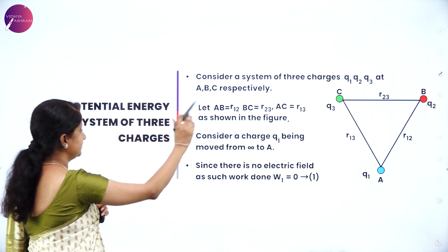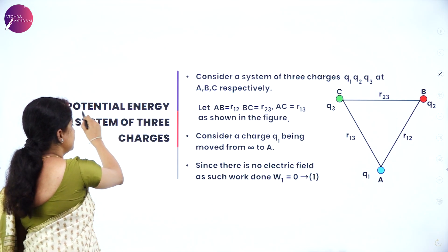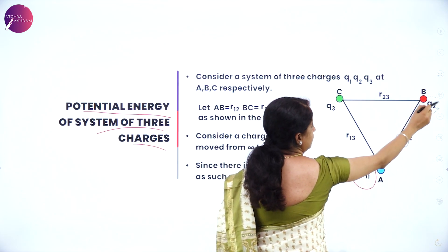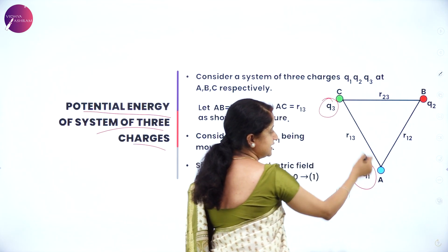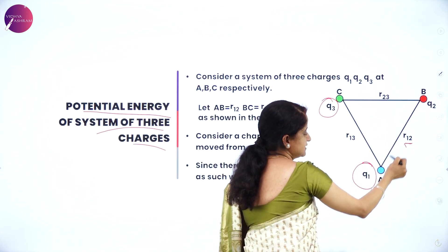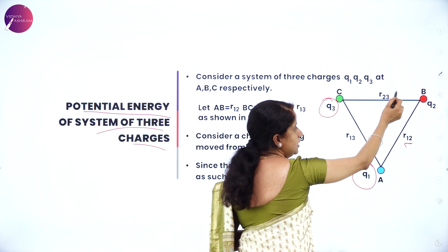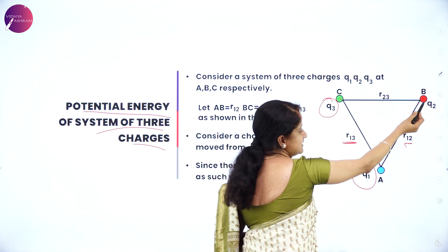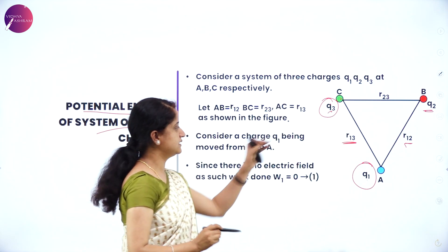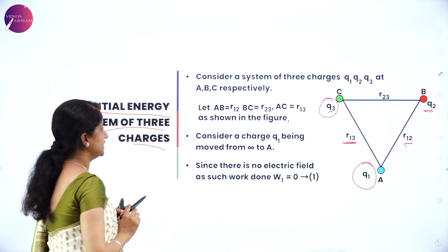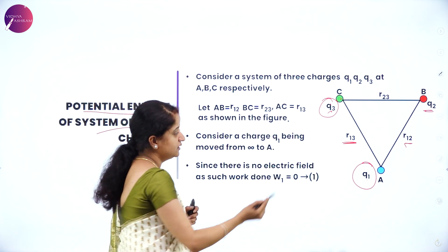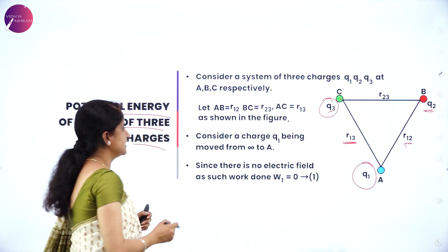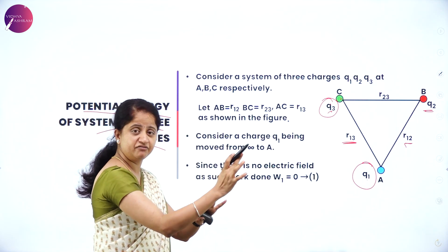Now let us derive the same for a system of three charges. I have three charges Q1, Q2, and Q3 at points A, B, and C respectively. R12 is the distance between Q1 and Q2, R13 is the distance between Q1 and Q3, and R23 is the distance between Q2 and Q3. Initially all three charges are at infinite distance.